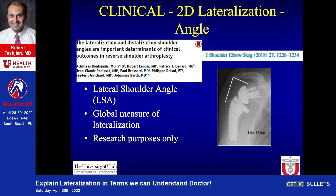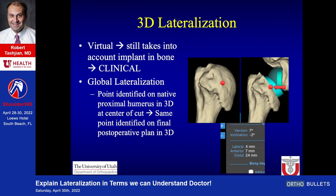You can also measure clinical lateralization using an angle — the lateral shoulder angle — which takes the angle from the superior pole of the glenoid to the lateral aspect of the acromion to the lateral aspect of the greater tuberosity. This is a global lateralization measure but is really for research purposes only. Finally, there is 3D lateralization, which is virtual and accounts for the actual implant placed inside the bone. A point is identified on the native proximal humerus in three dimensions at the center of the cut, and the same point is identified on the final postoperative plan. In this case, you can see it's four millimeters.